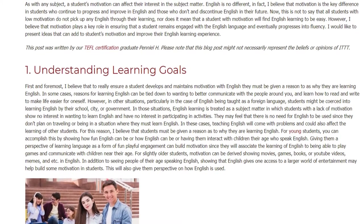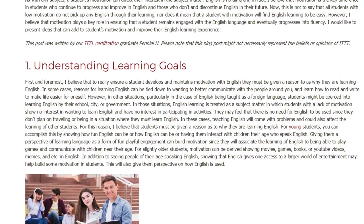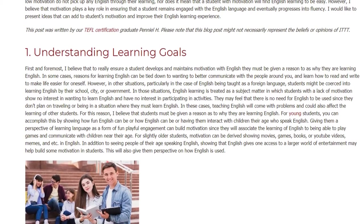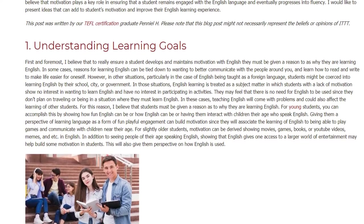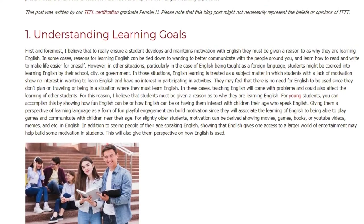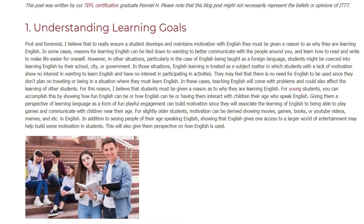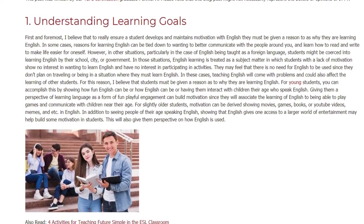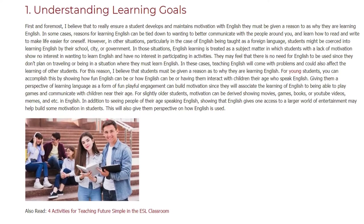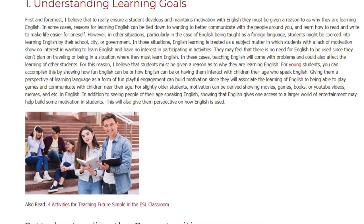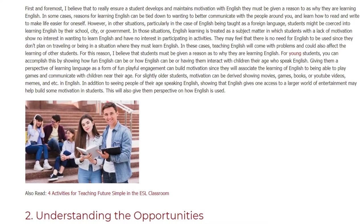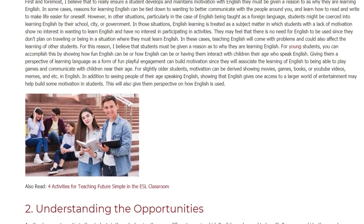In these cases, teaching English will come with problems and could affect the learning of other students. For this reason, students must be given a reason as to why they are learning English. For young students, you can accomplish this by showing how fun English can be, or by having them interact with children their age who speak English. Giving them a perspective of learning language as fun, playful engagement can build motivation, since they will associate learning English with playing games and communicating with peers.